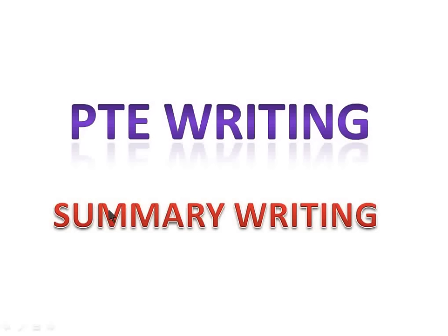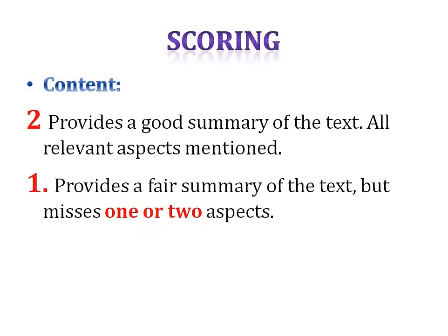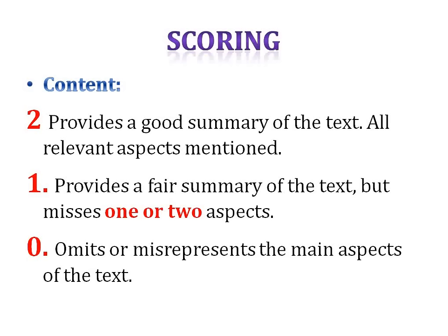First of all, the criteria of scoring. The summary is scored on the basis of content, just like other items. Two marks are given if the person provides a good summary of the text and all relevant aspects are mentioned. One mark if the person provides a fair summary but misses one or two aspects of the paragraph. No mark will be given if the person omits or misrepresents the main aspects of the text.